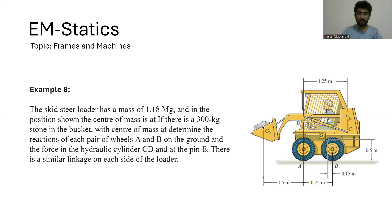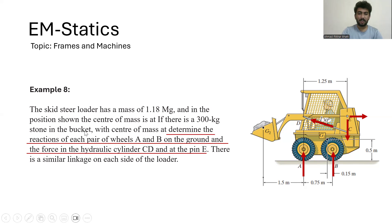In this problem, we have to find the reaction forces of each of the pair of wheels A and B, the force in the cylinder CD, and the force at the pin D. The mass of the loader is about 1.18 megagrams acting at point G1, while at point G2 we are given a mass of 300 kg. To find the reaction forces or other forces, we can use the weight instead of the mass.